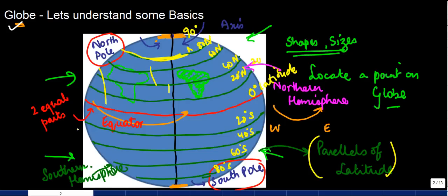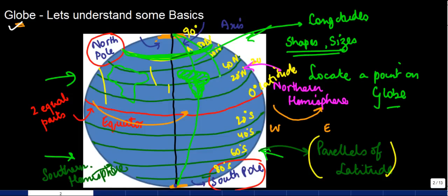Once you know that a place lies on 80 degrees north, it can still lie anywhere along that line. To fix exactly where a place is located, we have another set of lines which run from the North Pole to the South Pole — these are known as longitudes. They also have degrees of their own. If a place lies at 80 degrees north latitude and 30 degrees longitude, then you can exactly pinpoint where it is. Through the combination of latitude and longitude, you can locate any place on earth. We'll learn more about longitudes in subsequent detailed videos.